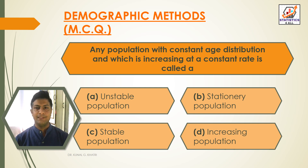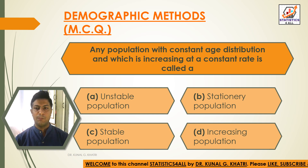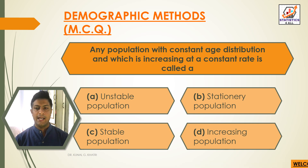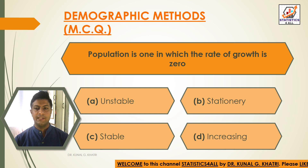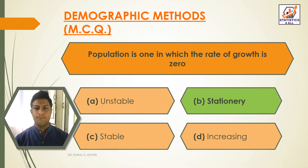Next question: any population with constant age distribution and which is increasing at a constant rate is called — Option A: unstable population, Option B: stationary population, Option C: stable population, Option D: increasing population. The answer is Option C — stable population. Next question: a population in which the rate of growth is zero — Option A: unstable, Option B: stationary, Option C: stable, Option D: increasing. The answer is Option B — stationary population.